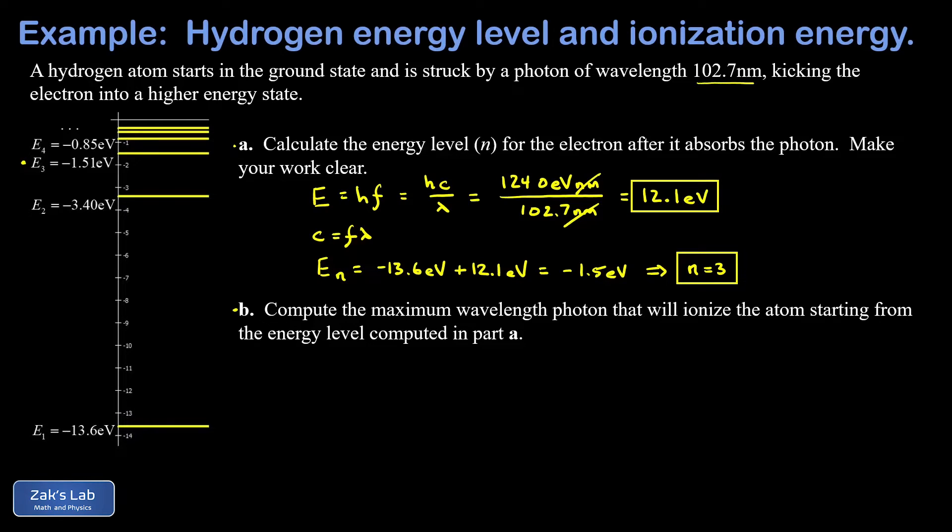Well, looking at E₃ in the diagram, that's -1.51 eV. So the minimum energy that we need for our photon is 1.51 eV. So we're going to compute the wavelength corresponding to 1.51 electron volts of energy, and that's the maximum wavelength that will ionize this atom because any longer wavelength means a lower energy.